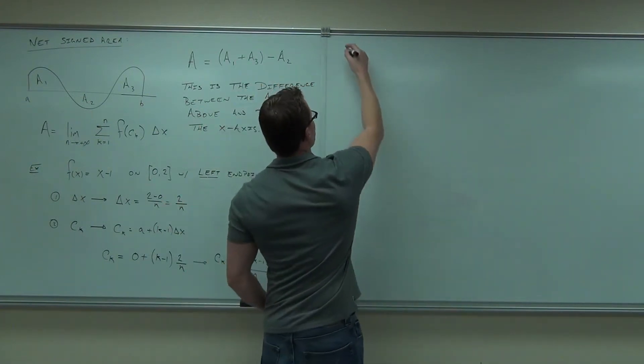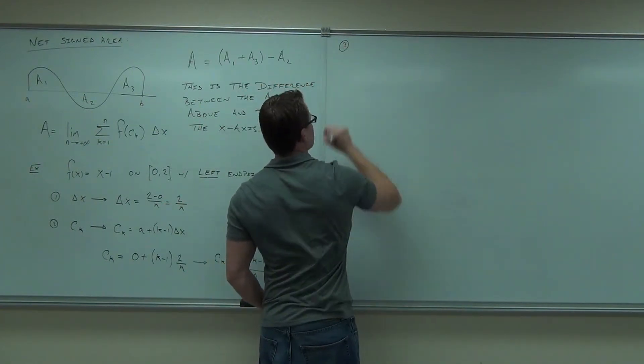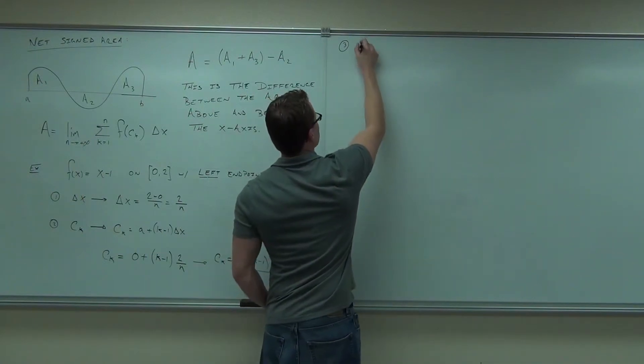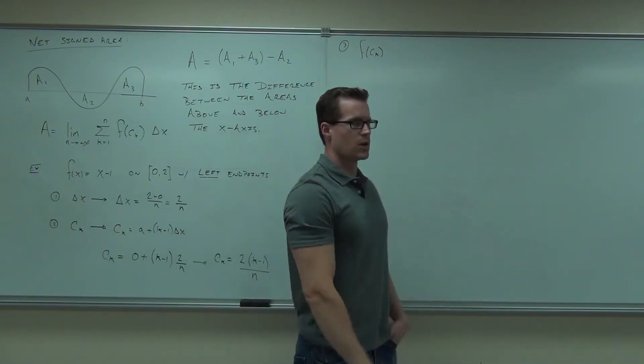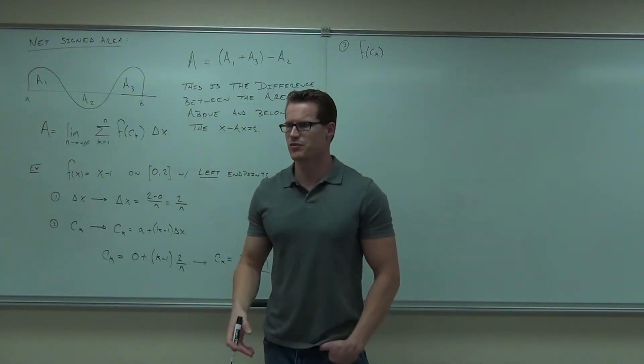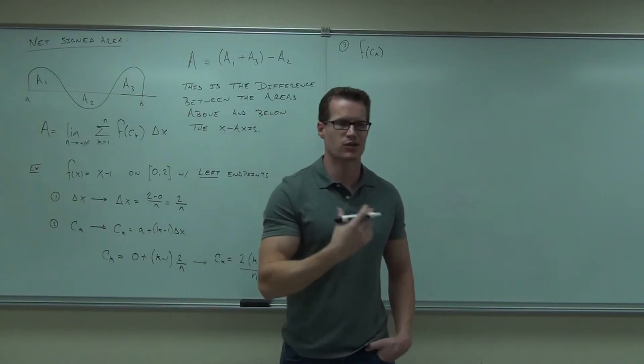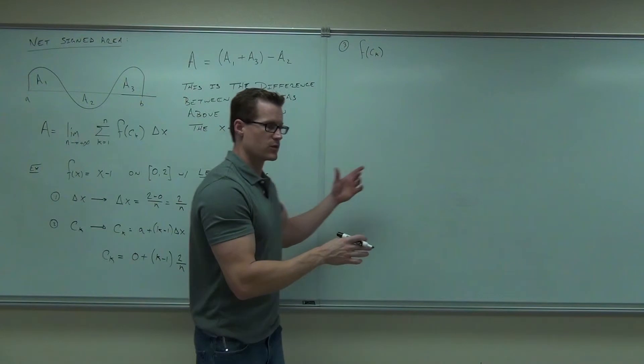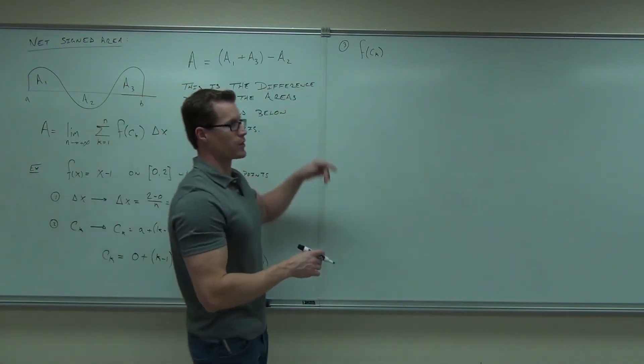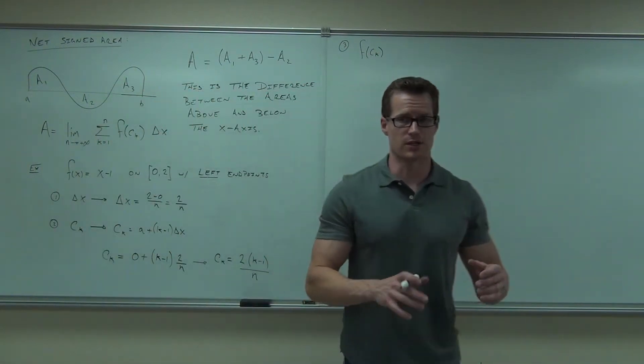What's step number 3? Come on, we're on a roll. Find the function of c sub k. Good. Sure. Or x_k dot, which is what we used before to show the arbitrary point. I like the x_k dot because it means arbitrary. That's why I showed it to you initially. But the c sub k says the same thing. It says, can you find out, using our arbitrary point, what the function's going to look like?